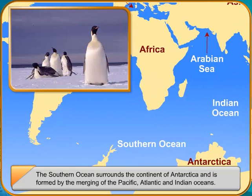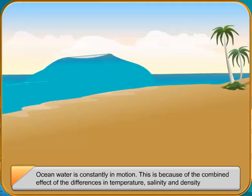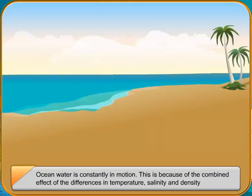Ocean water is constantly in motion. This is because of the combined effect of the differences in temperature, salinity, and density between the waters of different oceans and the effects of winds.